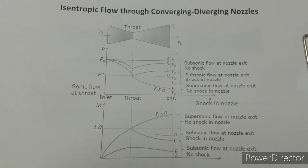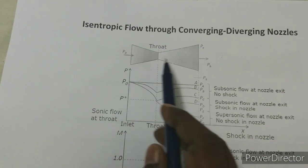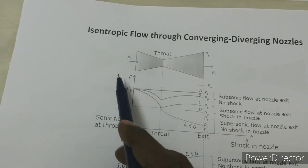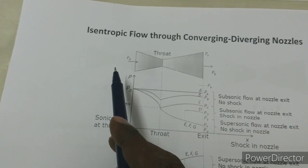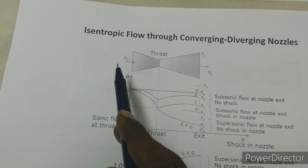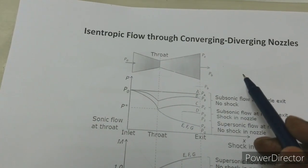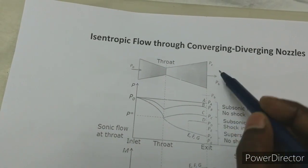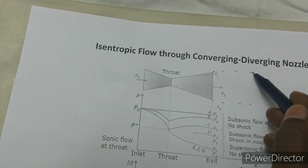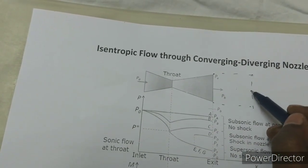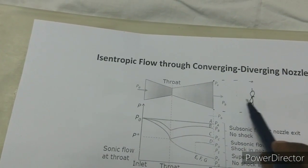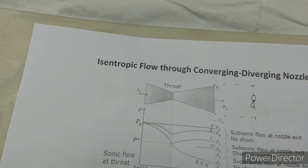Here you can see there is a convergent section followed by a divergent section. At the entry to the convergent section, we have a stagnant flow where properties are P0, T0 and so on. At the exit side, the downstream side, we assume there is a reservoir with a control valve. By operating this control valve, we can control the back pressure Pb.